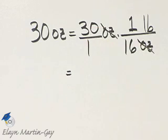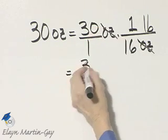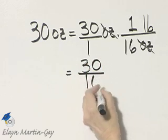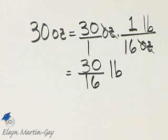Notice ounces divide out just like I want, and I have 30 times 1, or 30, over 1 times 16, or 16, and notice I am in pounds.